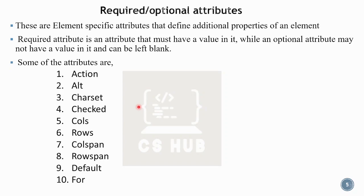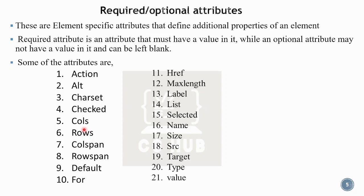Some examples of element-specific attributes include: action for the form element, alt for images, checked for checkboxes, colspan and rowspan for tables. If you use the href attribute, it is specific to anchor links. Other element-specific attributes include label, list, and selected. These are particular to specific elements, and we need to learn about five or six of these attributes.